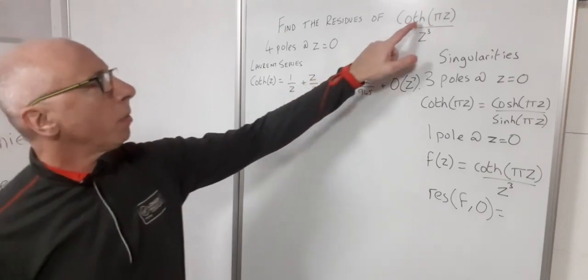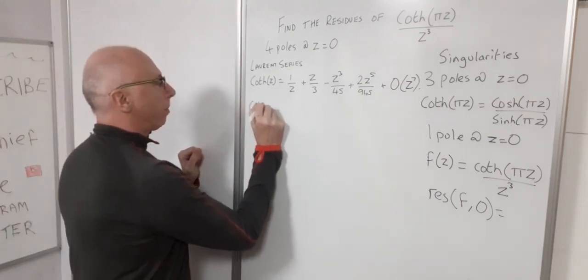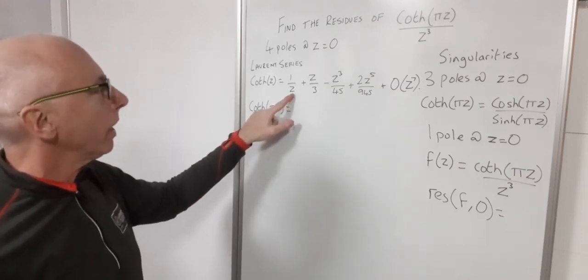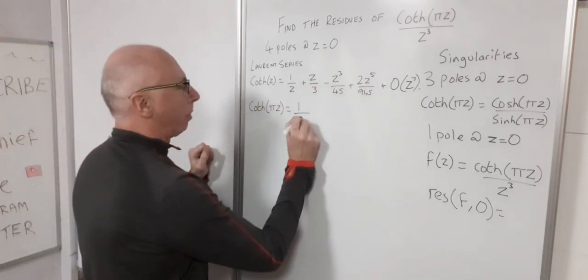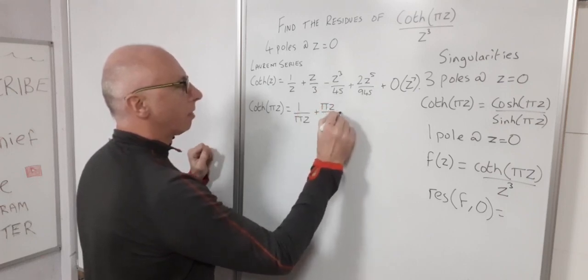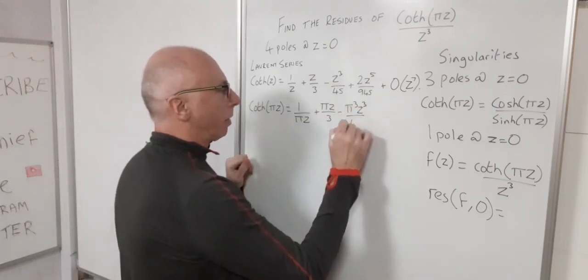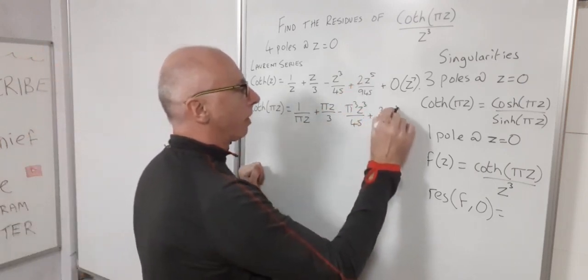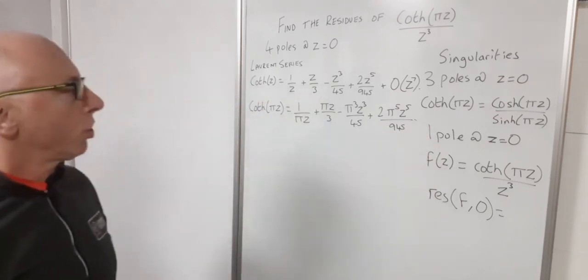Okay now we want hyperbolic cotangent function pi z. So let's just transfer that with pi z in there. So whenever we see a z we'll multiply it by pi and raise it to the same power as the indices of the z. So now I've got 1 over pi z plus pi z over 3 minus pi cubed z cubed over 45 and then just sticking to the fifth term, this will be pi to the 5 z to the 5 over 945. We'll just stop it there.